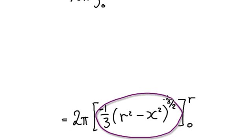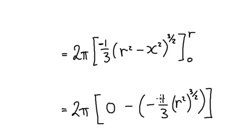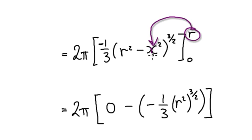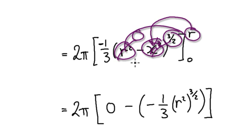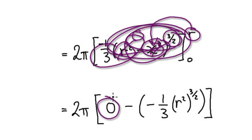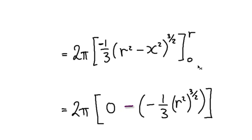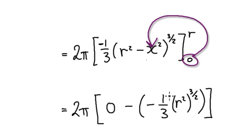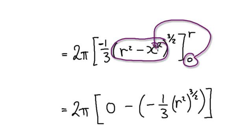So this is what we've got. Now evaluate this between the limits. When you put r into here, you see r squared, and then these two here will cancel each other out, giving you zero. Zero to the power of 3/2 will be zero, so everything from the upper limit will be zero.